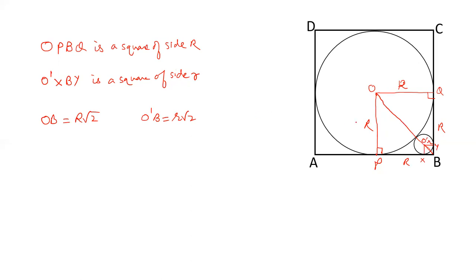Now let's see what OB equals. Let's say the point of contact is E. Then OB equals OE plus E O prime plus O prime B. Now, OE is the radius R, E O prime is the radius r, and O prime B is r root 2. So R root 2 equals R plus r plus r root 2, which gives us R root 2 minus R equals r plus r root 2.